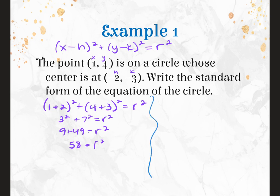Going back to standard form and plugging in H, K, and R: X minus negative 2 becomes (X plus 2) squared, plus Y minus negative 3 becomes (Y plus 3) squared, equals R squared which is 58.